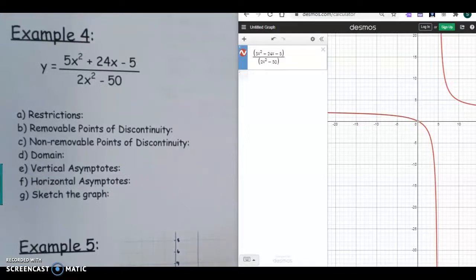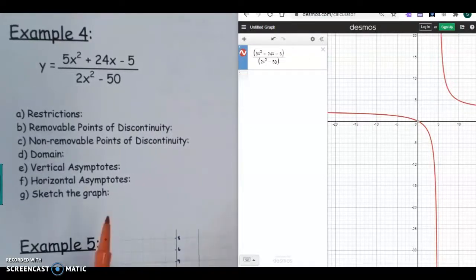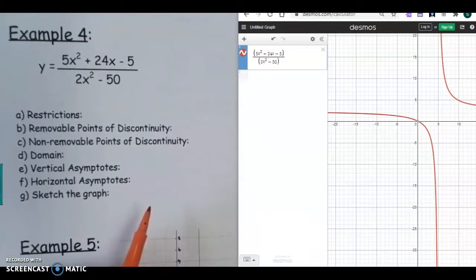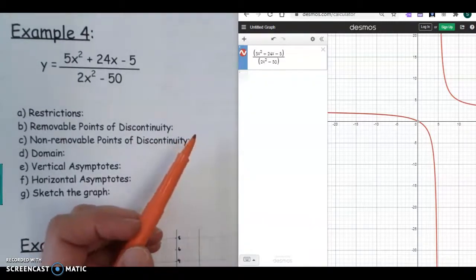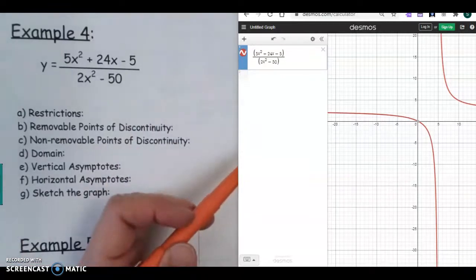Okay guys, we are back with Example 4, and I do have Desmos pulled up over to the side. I've already graphed this function, and I'm going to work this algebraically. We'll compare it to the graph.